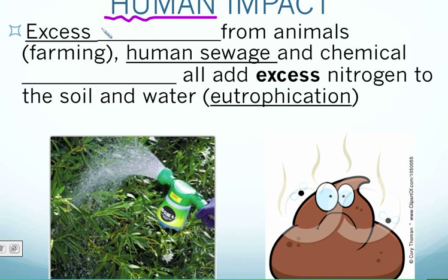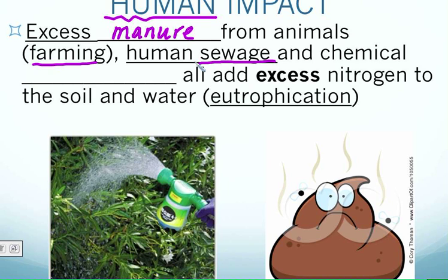One way we impact the nitrogen cycle is by having too much nitrogen found in certain places. That extra nitrogen can come from excess manure — animal waste in a farming environment — which can cause a backup in the nitrogen cycle. The same thing can happen from human sewage. The most common way we'll talk about, at least in our community, is from too much chemical fertilizer.